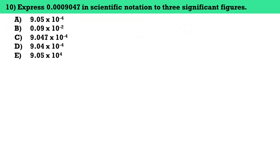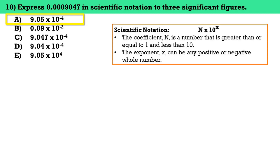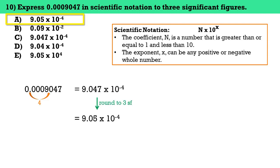Number ten, express 0.0009047 in scientific notation to three significant figures. The answer here is letter A, 9.05 times 10 to the negative 4. In scientific notation, a number is written as n times 10 to the power of x, where n is greater than or equal to 1 and less than 10. Moving the decimal point four places to the right, 0.0009047 becomes 9.047 times 10 to the negative 4. Rounded to three significant figures, this becomes 9.05 times 10 to the negative 4.